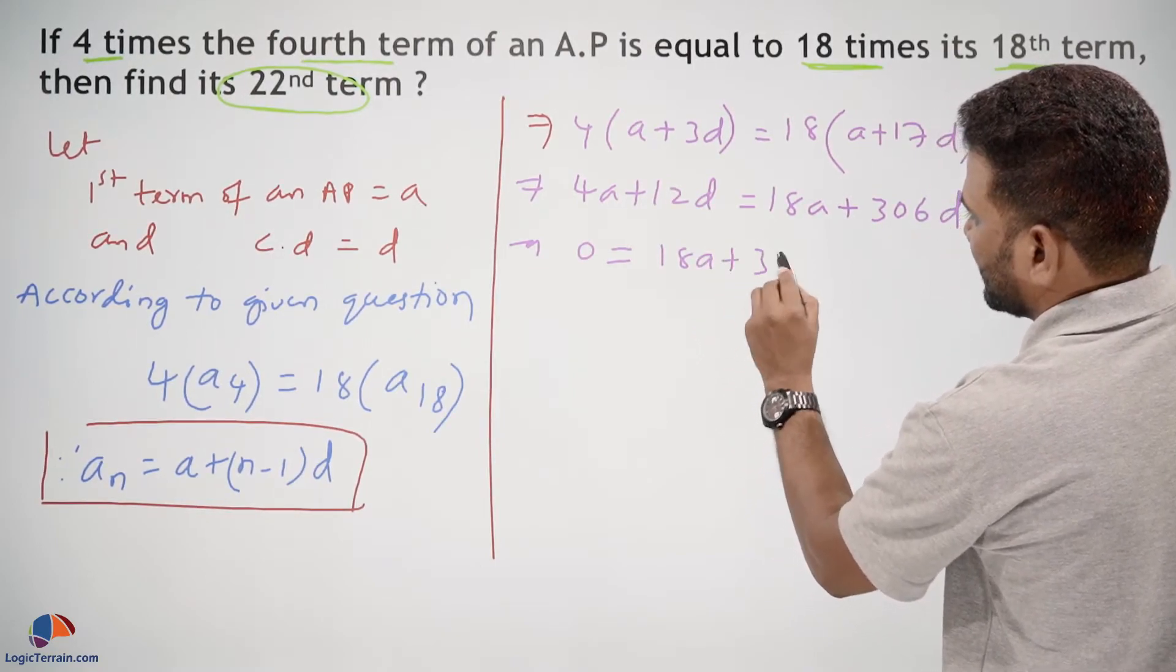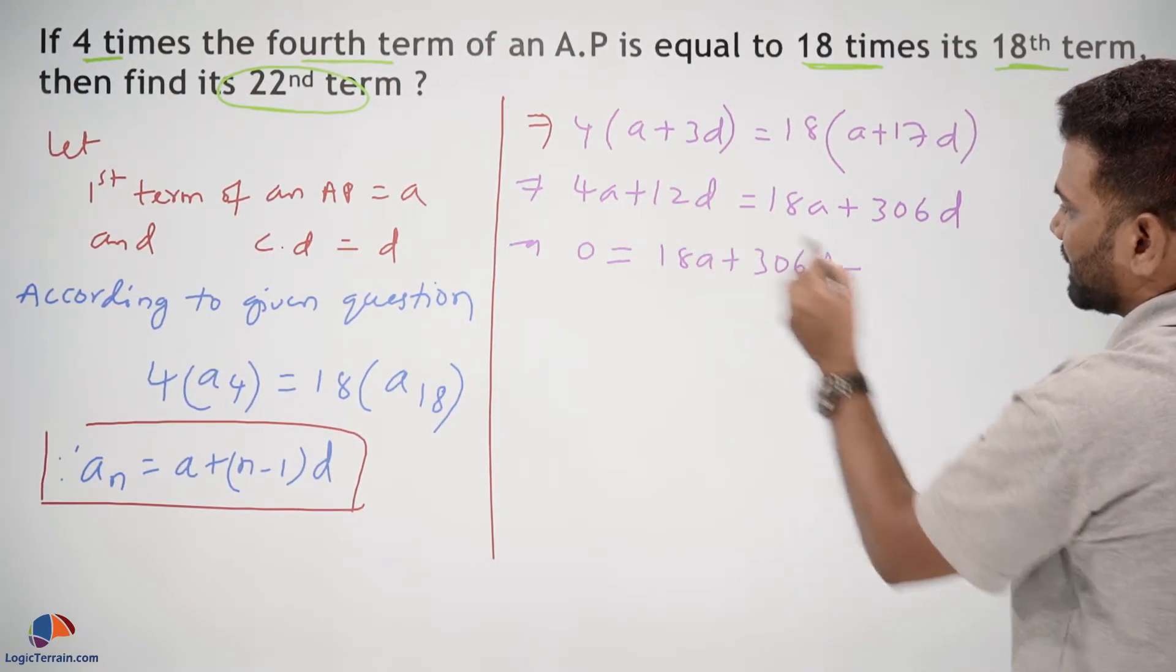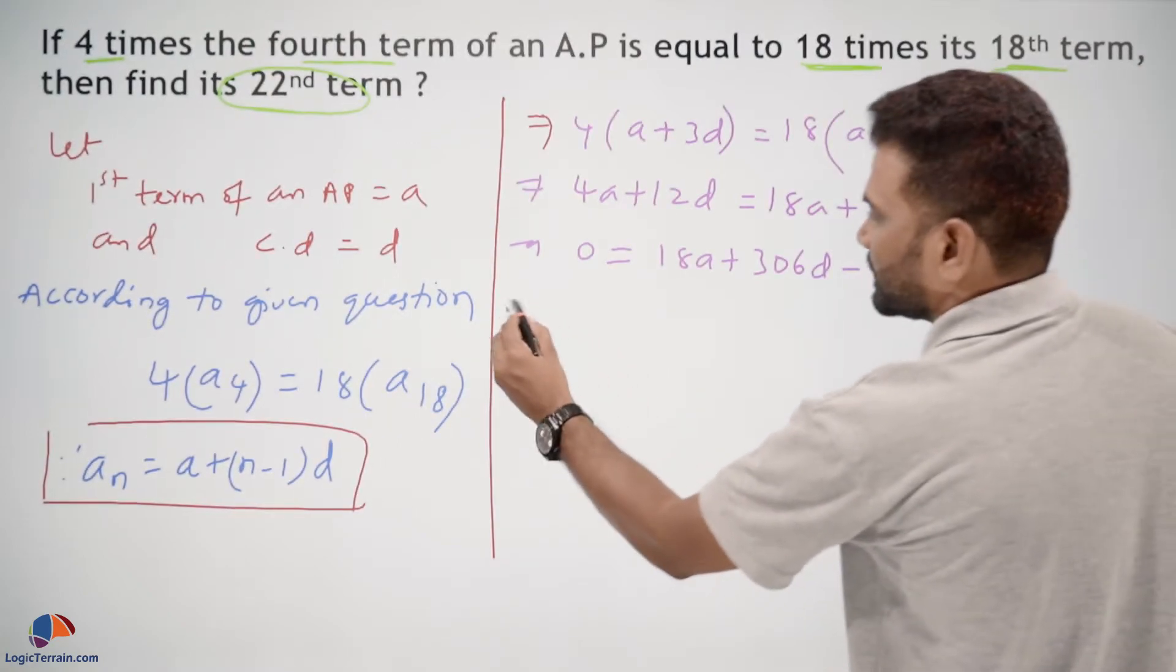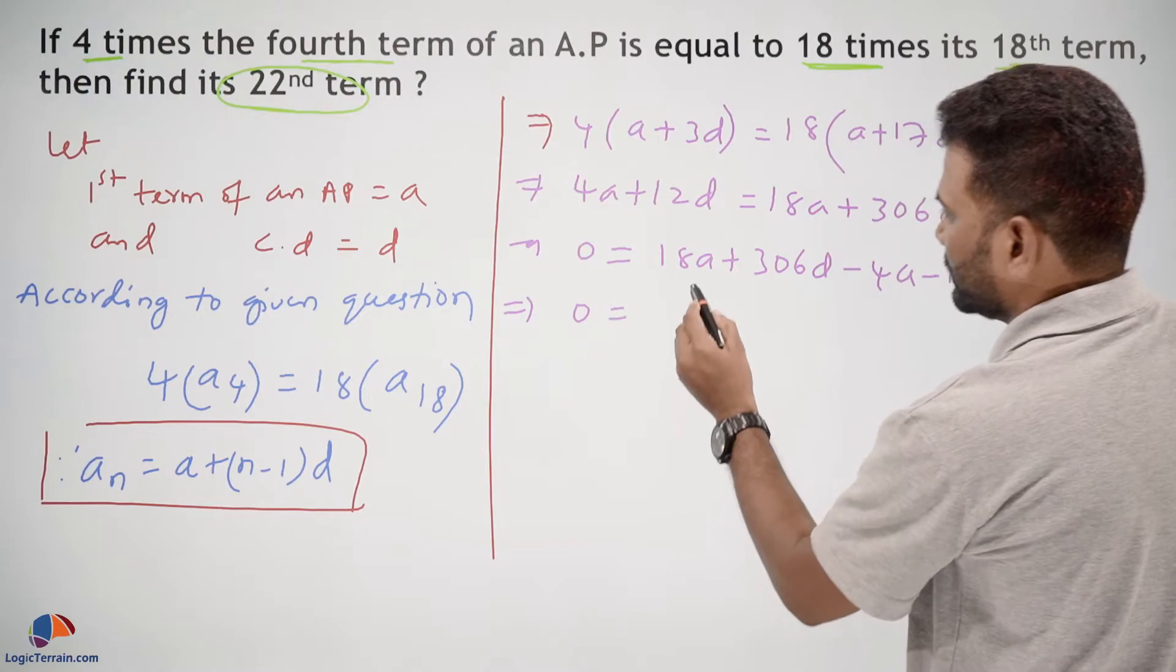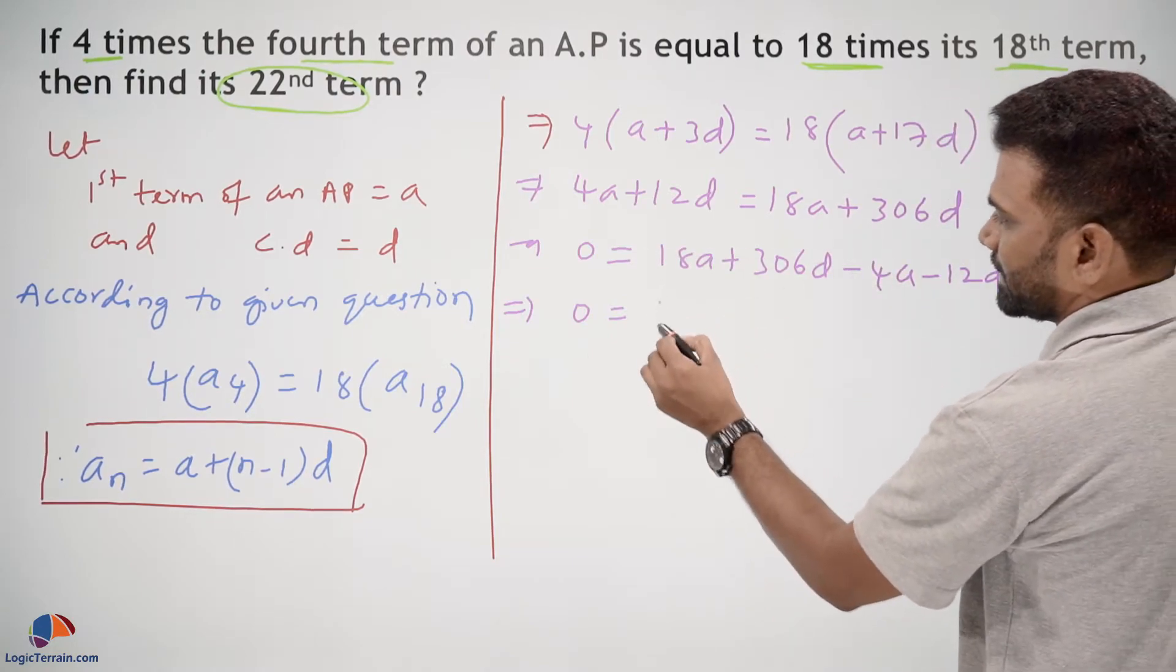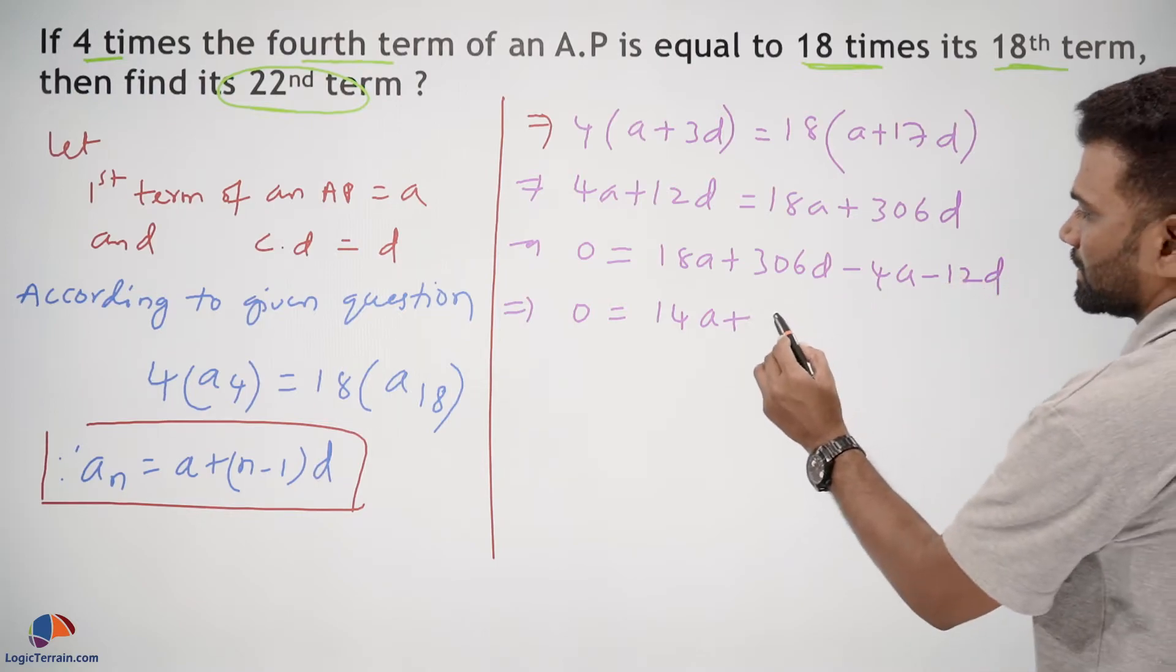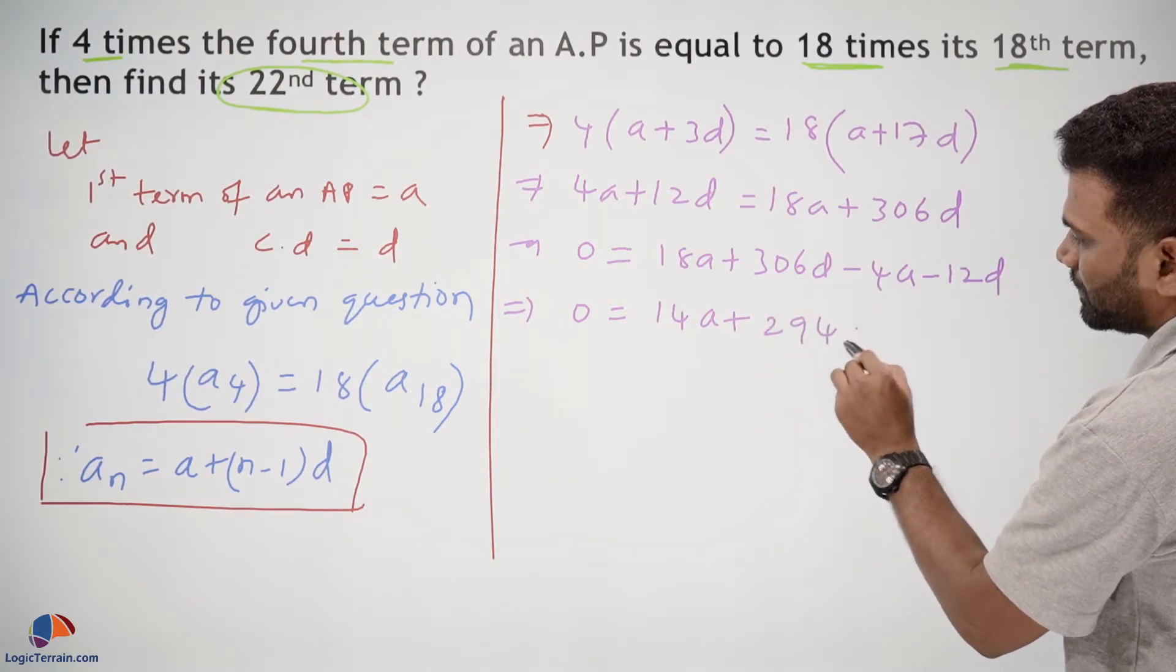So 0 equals 18A minus 4A, which is 14A, plus 306D minus 12D, which becomes 294D.